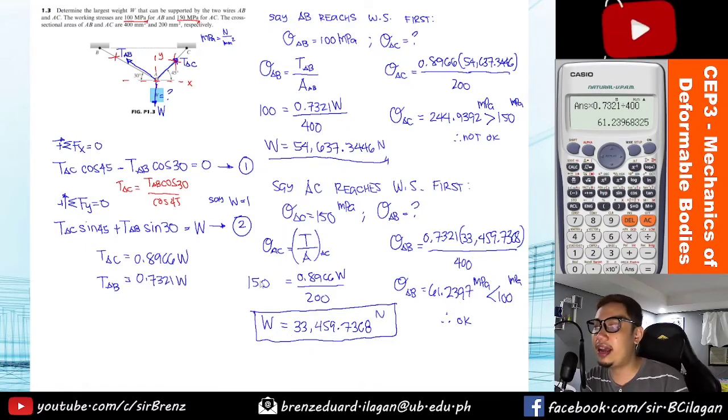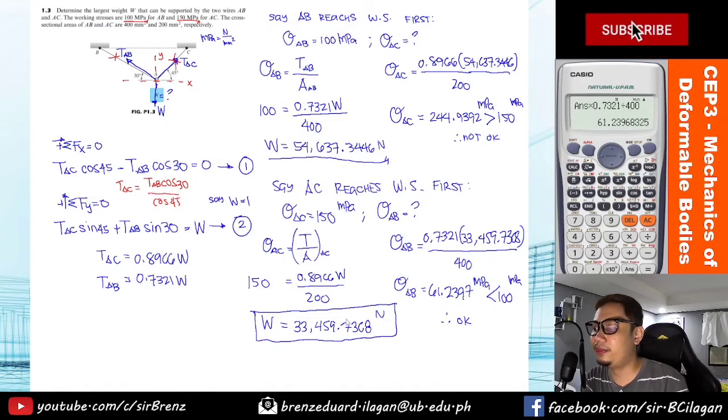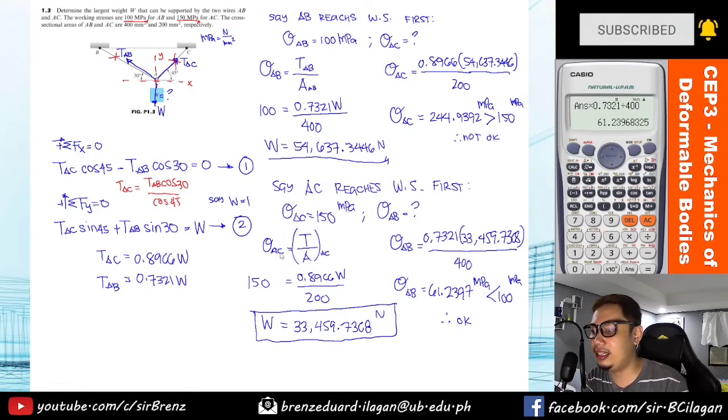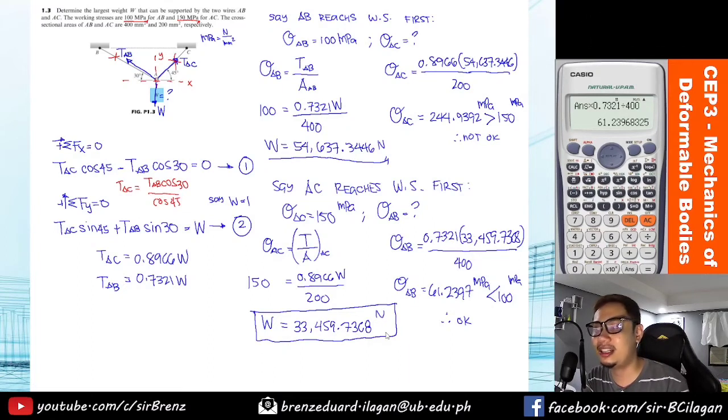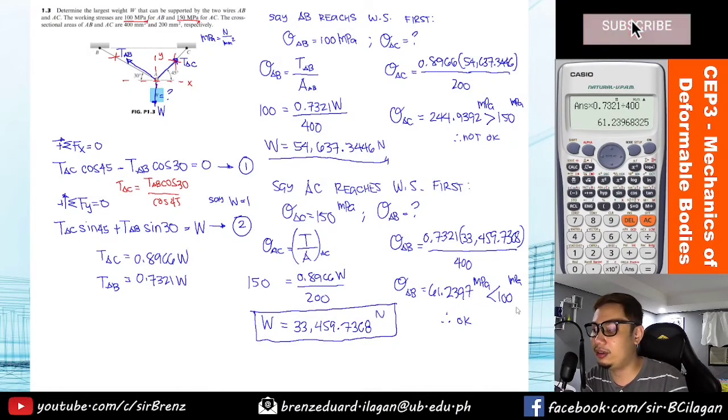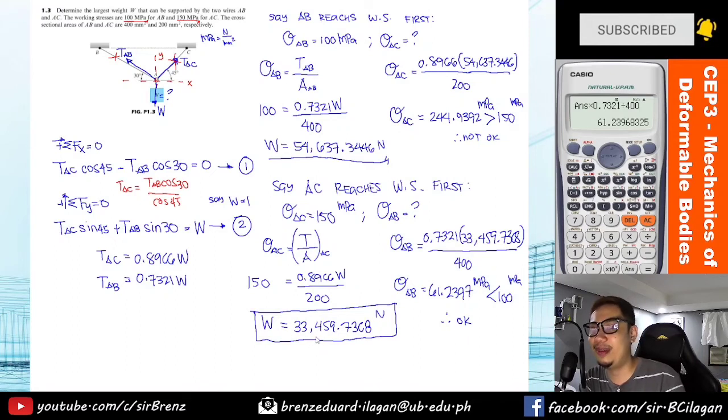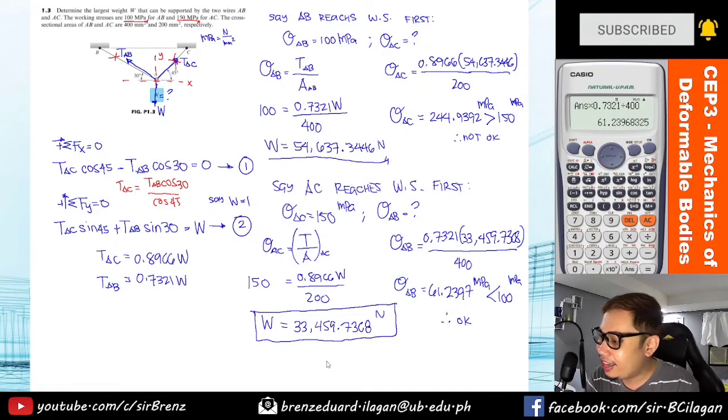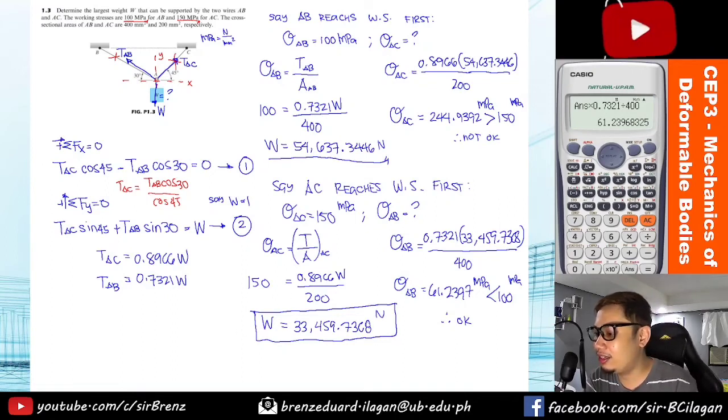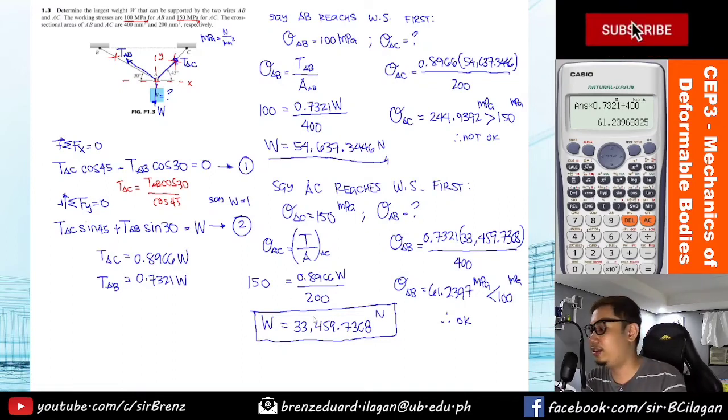So actually it can't anymore. If for AB alone, it can handle more than this. But since they're both carrying it, the limit of AC is only this weight. So in short, AC really can't. But if AB is saying it can handle more because 61 is still far from 100, but you can only go up to 33, so just adjust for your sake. Sana all.